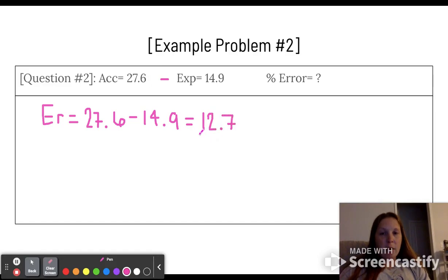That's my error. We're going to divide that by the accepted value, and we're going to multiply this answer by 100 to get it to a percent. So 12.7 divided by 27.6 times 100 comes out right at 46 percent.